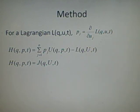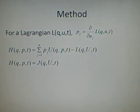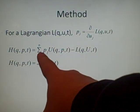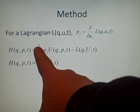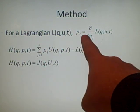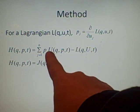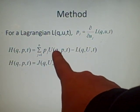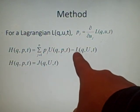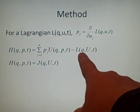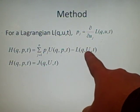And as our definition for the Hamiltonian here, the Hamiltonian H, we have it as the sum of j equals 1 to n of p_j, the conjugate momenta here, times the big U, which I'll explain in a minute, minus L Lagrangian, with Q, big U, T.